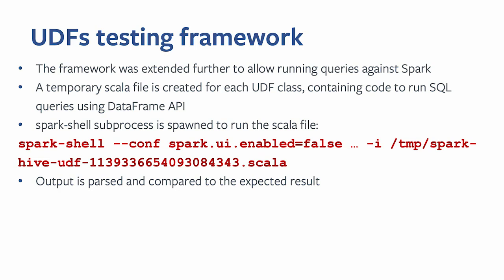The testing framework creates a temporary Scala file for each UDF class, containing code to run SQL queries using the DataFrame API, with SQL commands taken from the annotations. It spawns a separate Spark shell subprocess, runs the Scala file against Spark shell, then parses the output and compares it to expected results. This is how we identified a baseline of what we support and don't support in terms of Hive UDFs.